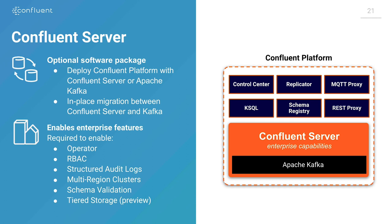A lot of these features require broker-level changes, and 5.4 includes a product called Confluent Server — like the Apache Kafka broker, API compatible and data compatible, but with extra features. Role-based access control, schema validation, tiered storage — all of these are broker-level changes happening in Confluent Server. It is quite possible to migrate from Apache Kafka into Confluent Server and back again, though migrating back means losing access to those great features. It's a low-risk thing to try out.